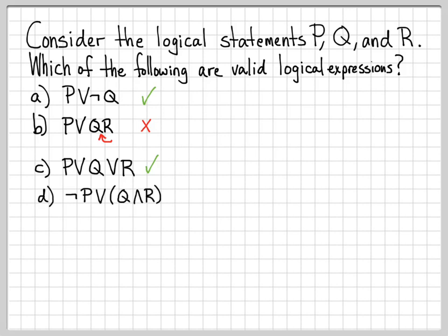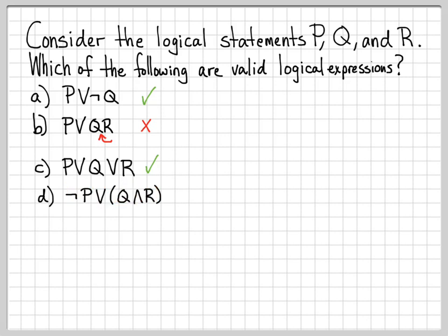What about 'not P or the quantity Q and R'? Is this a legitimate expression? And again, it is. Everything here is fine — we have Q and R connected properly, taking the not of something is fine, and then we have another logical connective between the two logical statements. So everything is connected just fine.